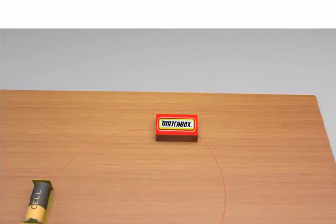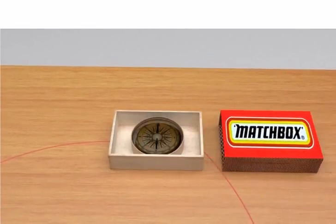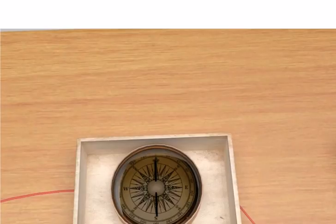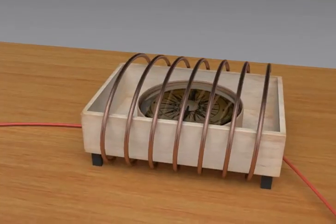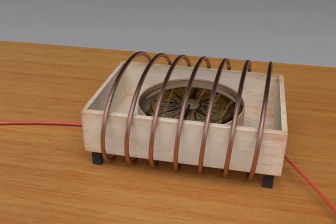Let us prepare a tester by using a compass. Take the tray of a matchbox and place a small compass needle in it. Now wrap an electric wire 5-6 times around the tray and connect one free end of the wire to the terminal of a battery.